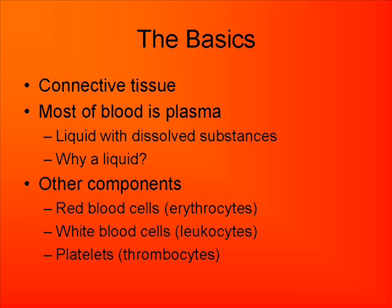Can you imagine if blood as a whole was solid? It wouldn't move as easily through your veins. There are other components of blood: red blood cells, also known as erythrocytes; white blood cells, called leukocytes; and platelets, known as thrombocytes.